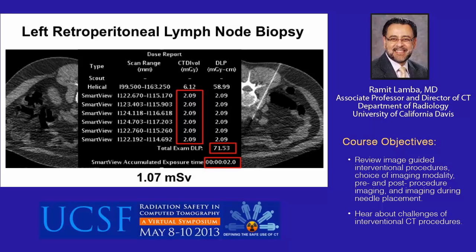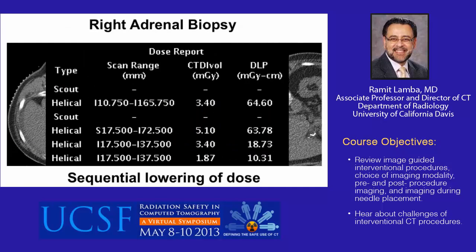In this example of a right adrenal biopsy, the diagnostic scan was obtained at 150 mAs. The first needle check scan was obtained at 100 mAs, and subsequent scans to confirm needle tip within the lesion were obtained at 60 mAs. By sequentially lowering the dose, we were able to decrease the CTDIvol from 5.1 for the diagnostic scan to 3.4 for the first needle check and 1.87 for the final needle check.